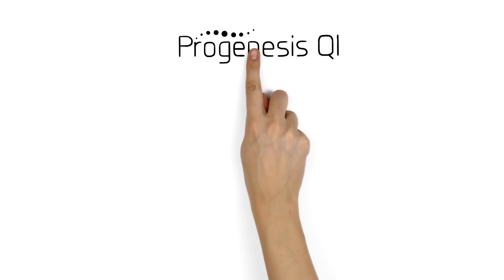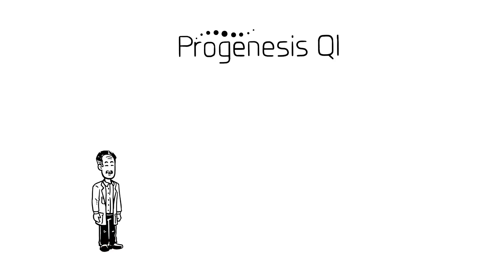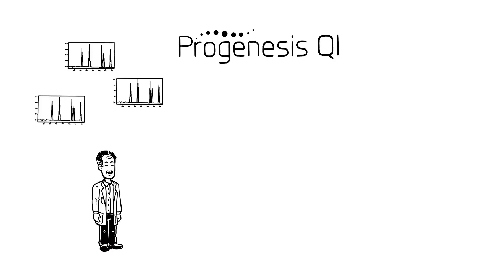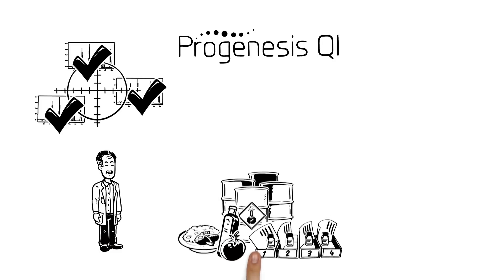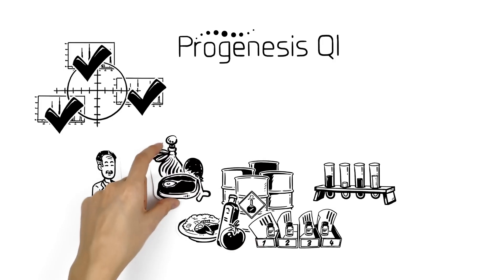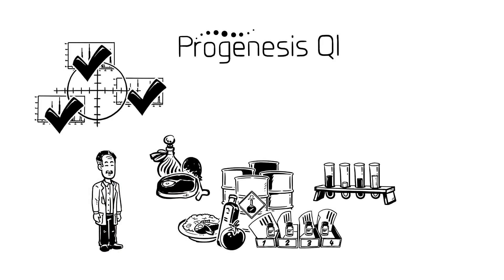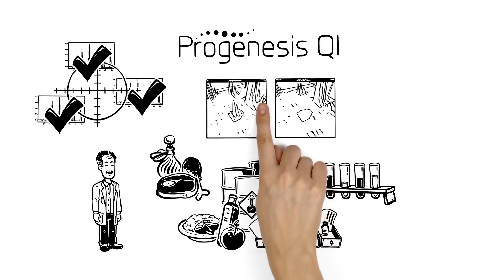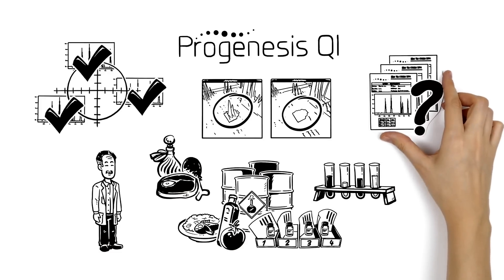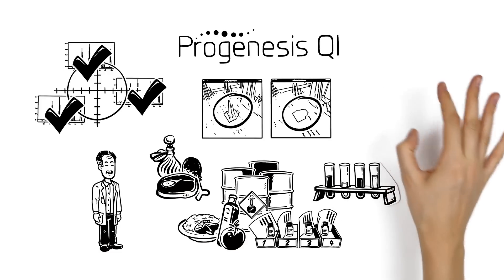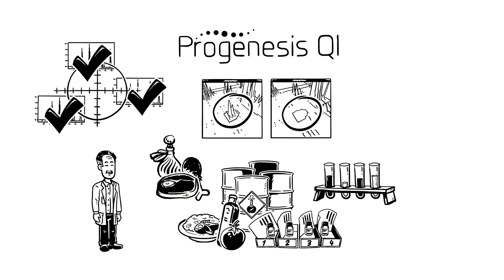Additionally, Progenesis QI offers Michael consistent peak picking across all runs, giving him accurate and precise quantification every time. He has no restrictions on the number of groups, samples, or experiments he can compare. The software takes advantage of ion-mobility separations, adding an additional dimension to his results, so Michael will be able to vividly see the differences whilst minimizing the possibility that additional interfering compounds could be present.